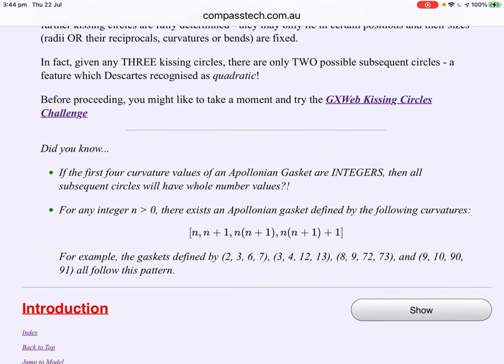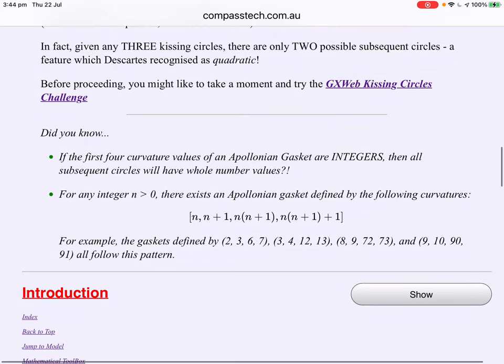Even more interesting, for any integer greater than zero, there will be a gasket defined by the curvatures n, n plus one, the product of those two, and that product plus one more. So for instance, 2, 3, 6, 7. 2 times 3 is 6, 6 plus 1 is 7. Look at the next. 3, 4 is 12 and 1 is 13. These are all Apollonian gasket, the first four elements.